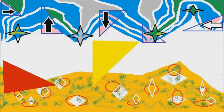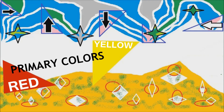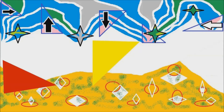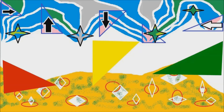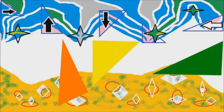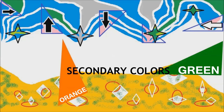Red and Yellow are Primary Colors. Orange and Green are Secondary Colors — in the Middle, Out.